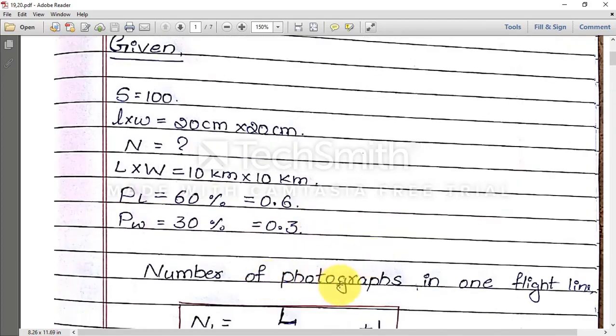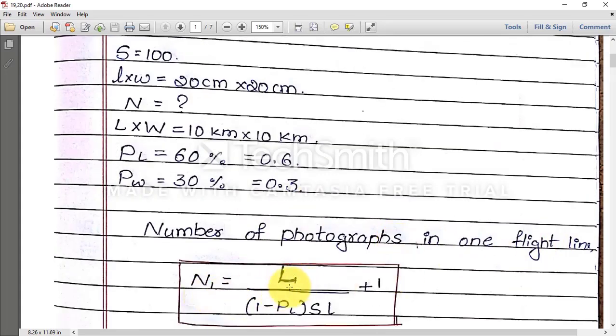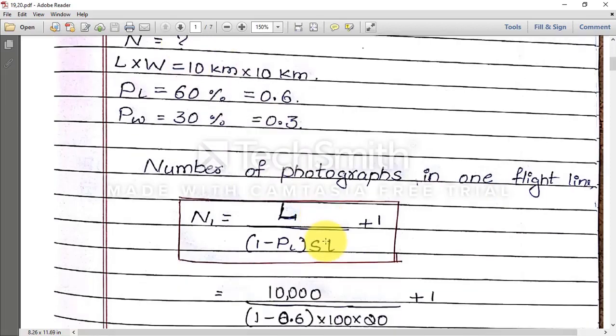The formula is N1 = L / [(1 - PL) × S × L] + 1. What is L? 10 kilometers. 1 - PL is 0.6, S is 100, small l is 20 centimeters. Substitute everything, you will get 13.5.